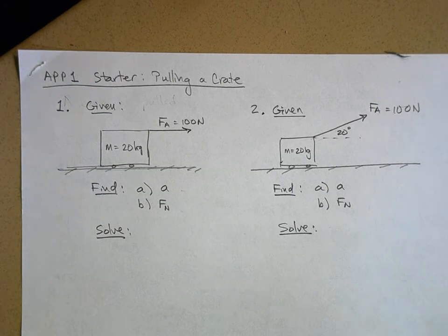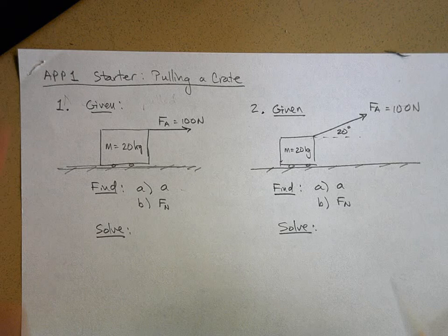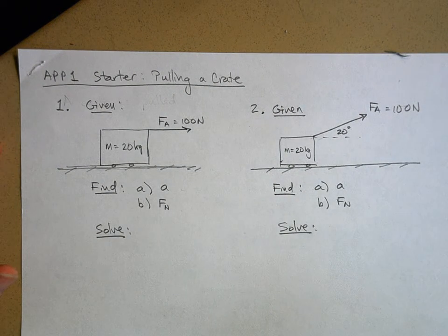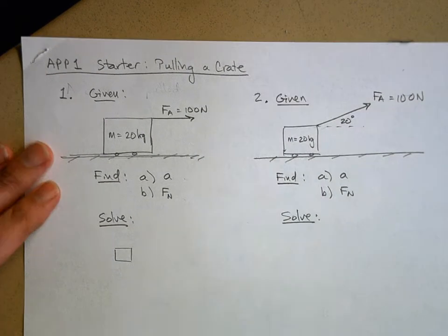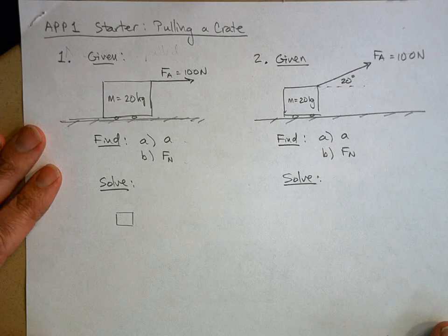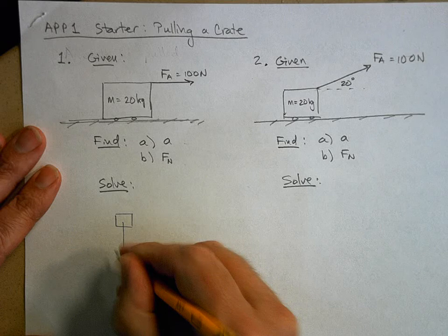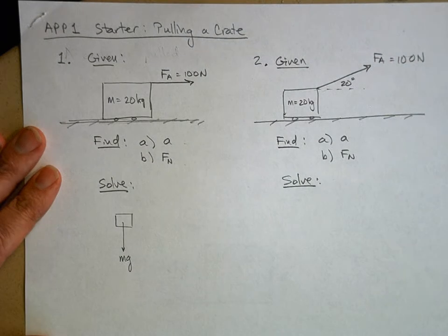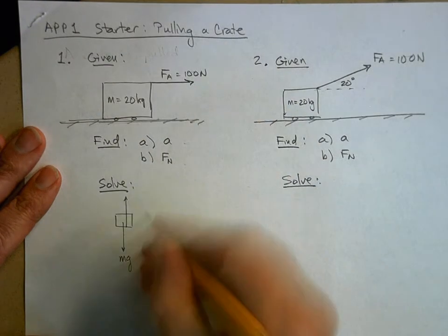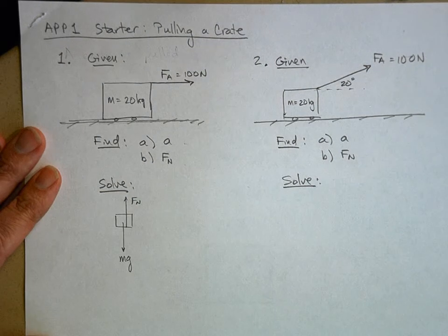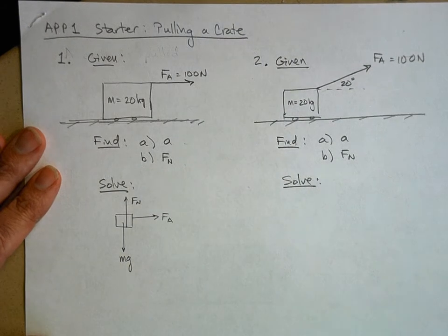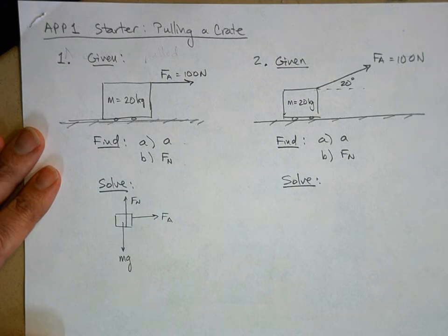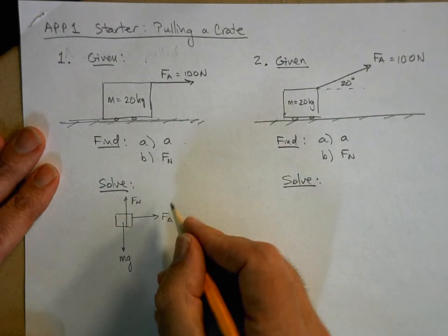Pause the video now if you're watching online. So I've kind of done step one for you on both of these. Let's do step two for this one — I'm going to draw it a little bit smaller to make it fit on the paper. We've got gravity pulling it down. Now how come it doesn't sink towards the center of the earth? Because the ground is pushing up with a normal force. And then we've got this 100 newton applied force — I'll just call it FA. These are all the forces acting on my object, so I'm done with step two.